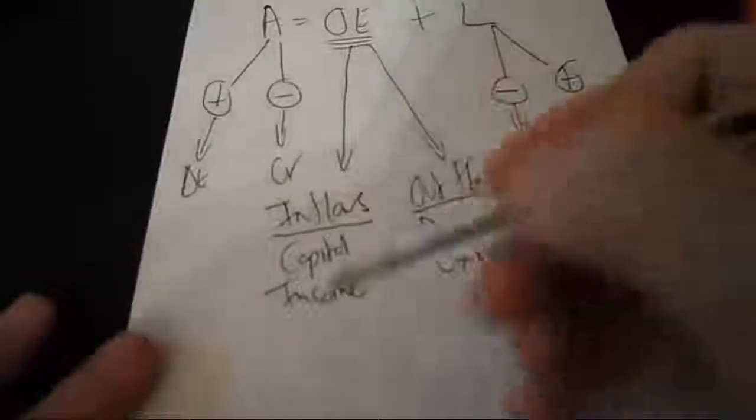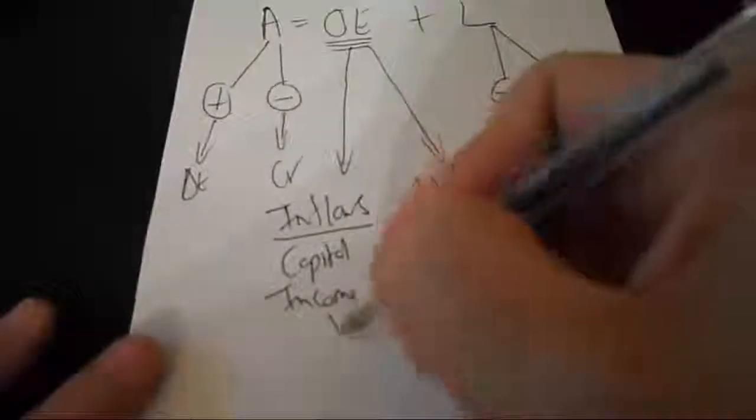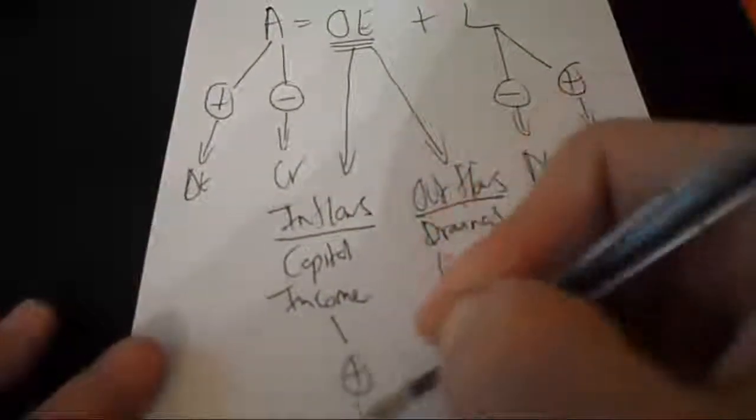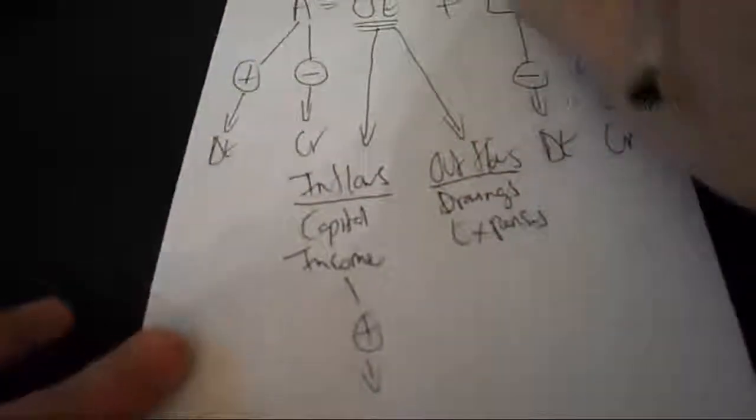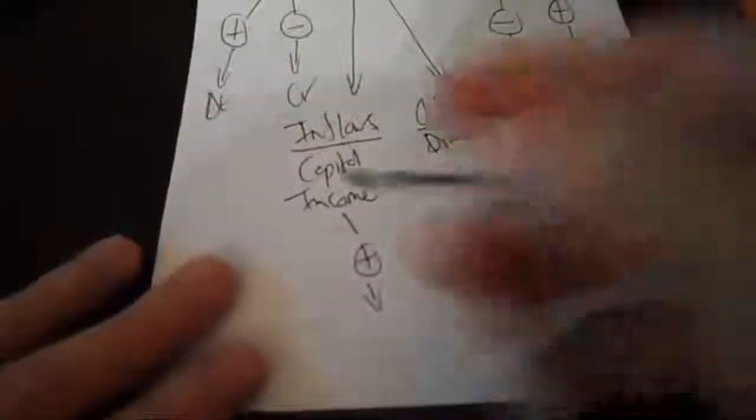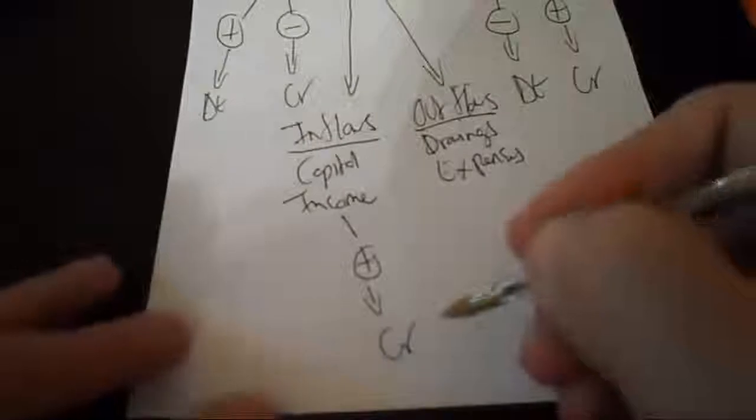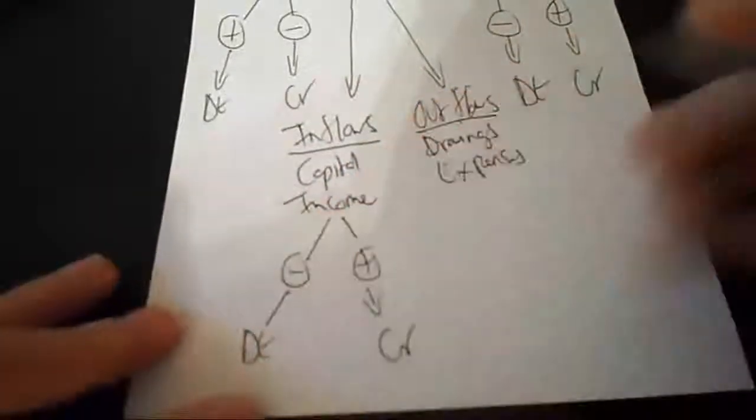Now when your inflows increase, you'll post it to the credit side, and when your inflows decrease you'll post it to the debit side.